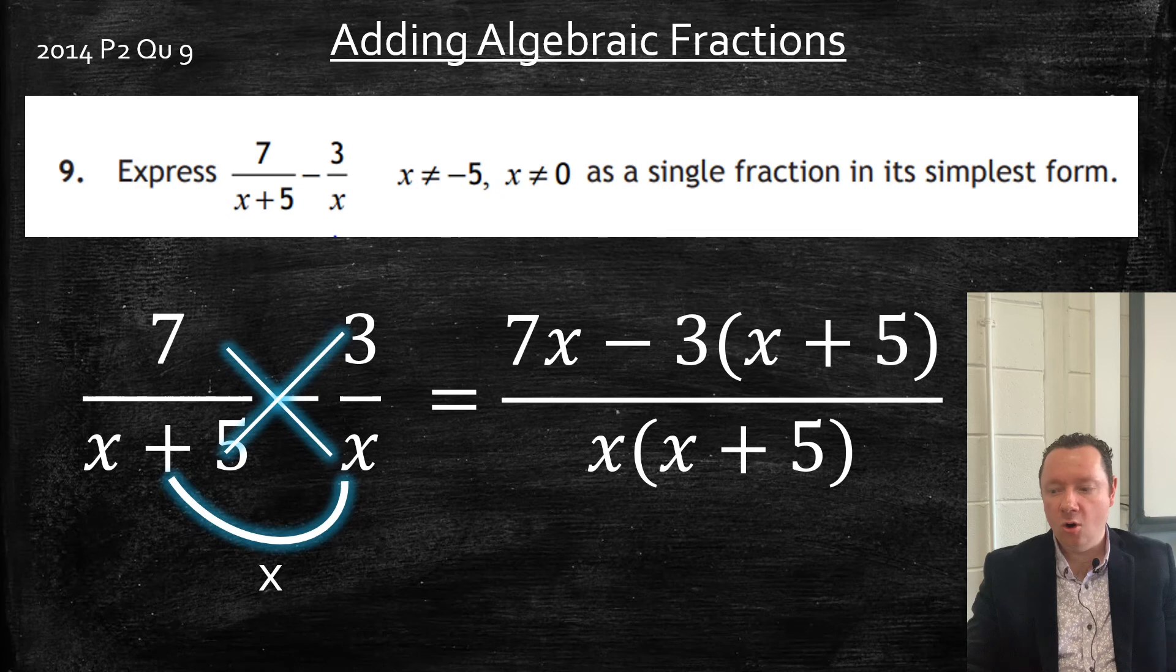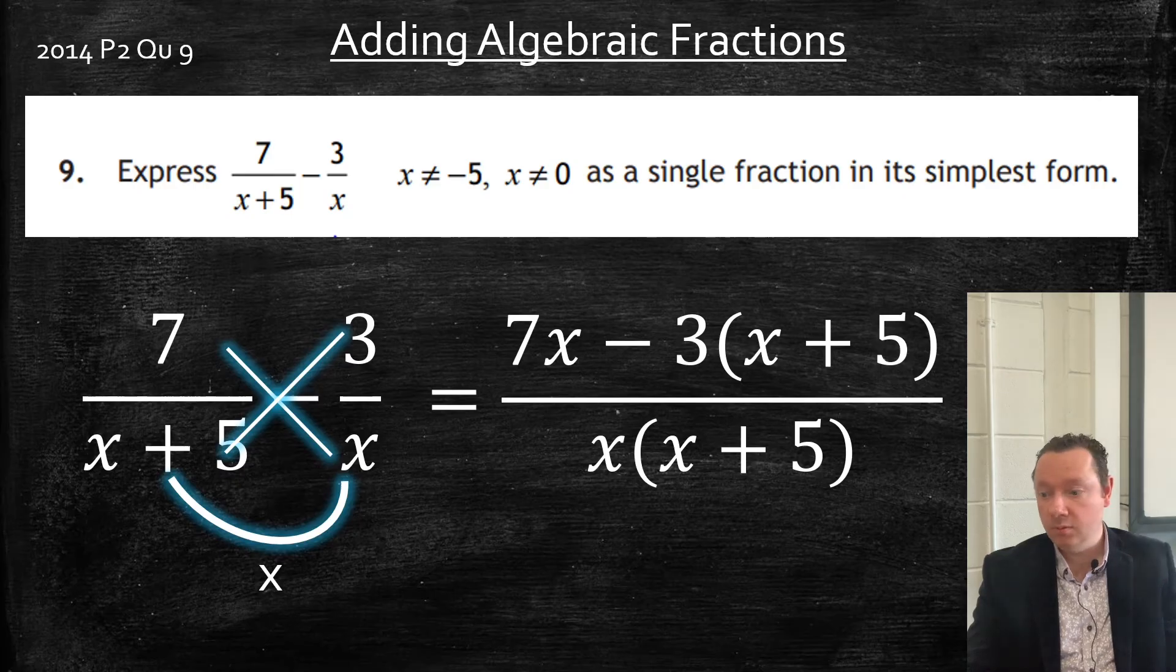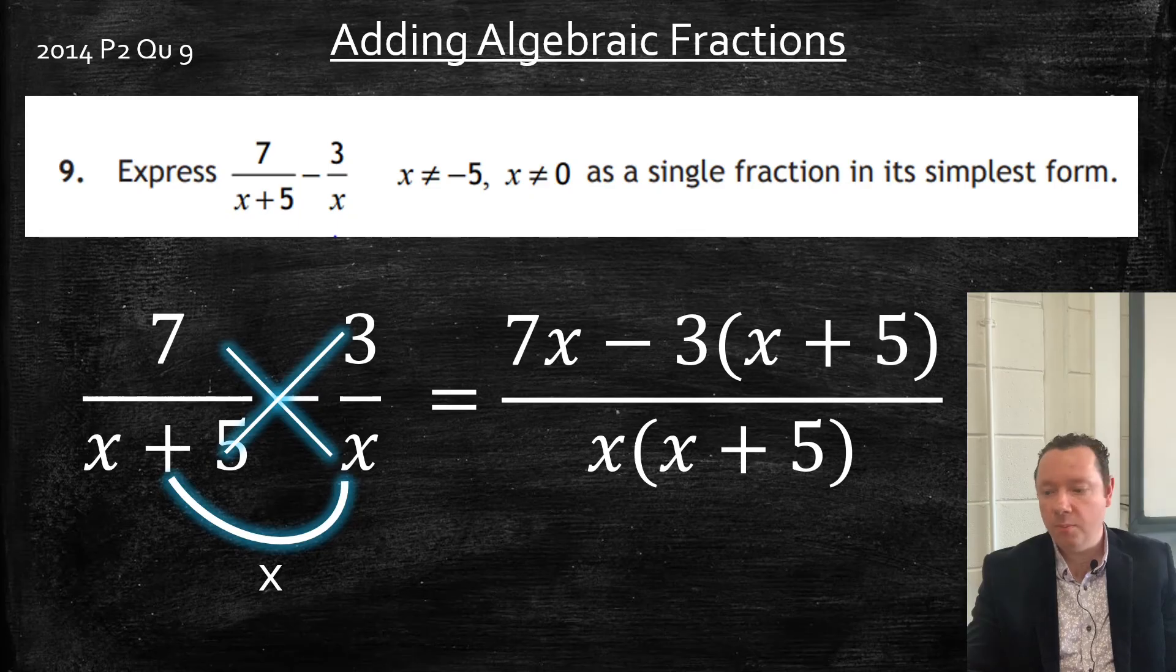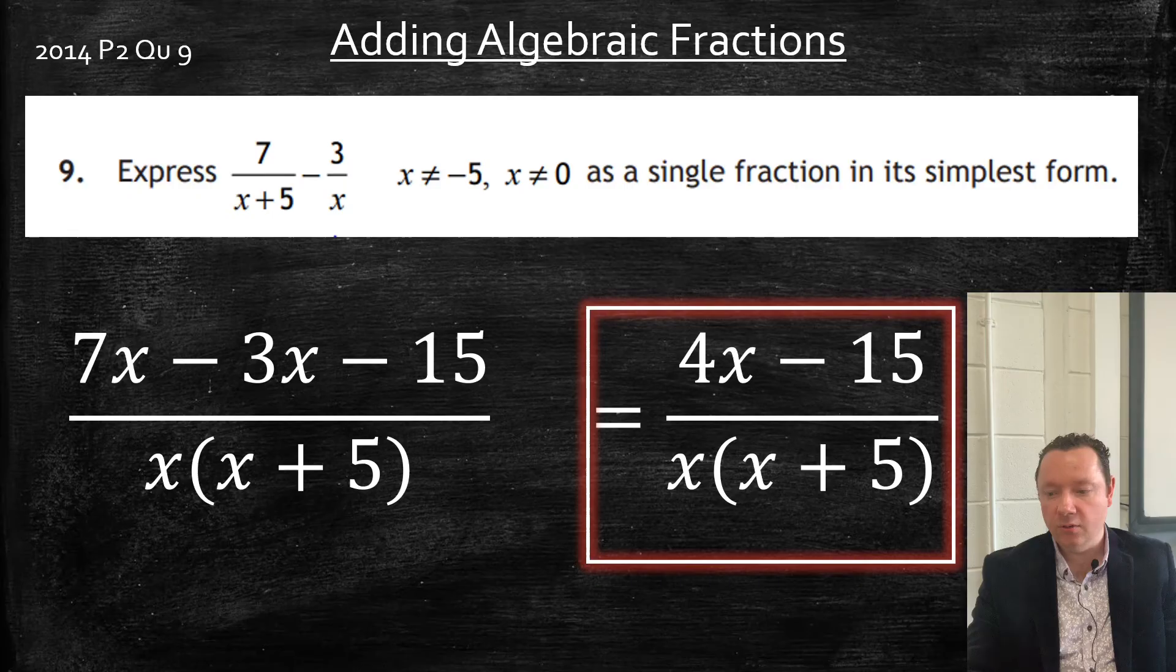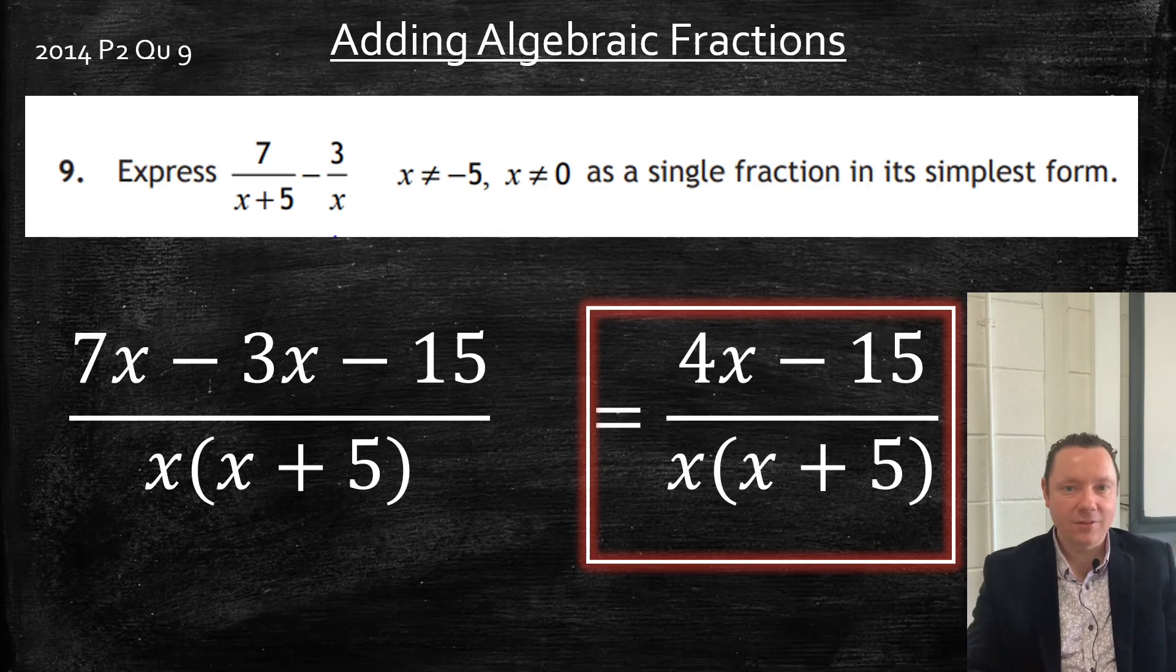we're going to get 7x - 3(x + 5) because we're times the whole thing by (x + 5). And in the bottom, x(x + 5) again because it's x times (x + 5). Now we can multiply out our bracket on the top. So we get 7x - 3x - 15 over x(x + 5). Simplifying the top is 4x - 15 over x(x + 5). And we're done.